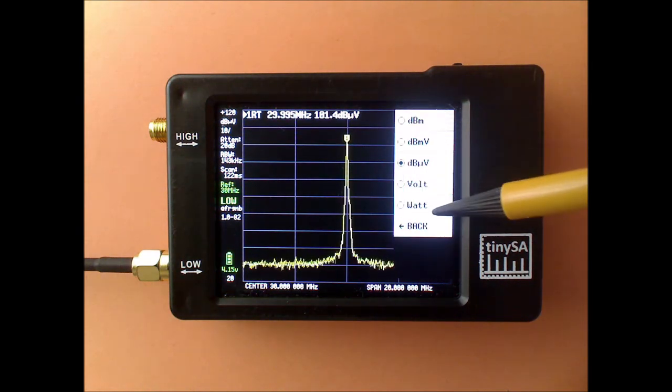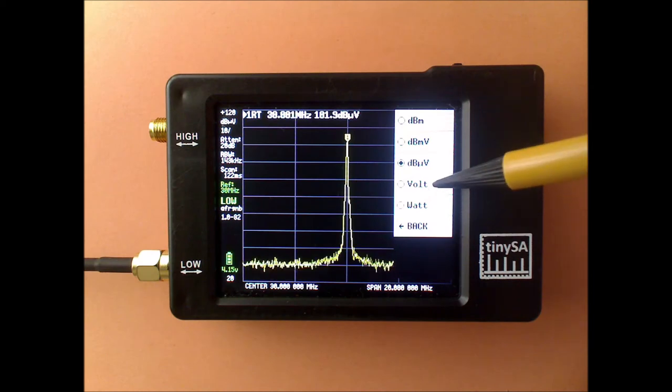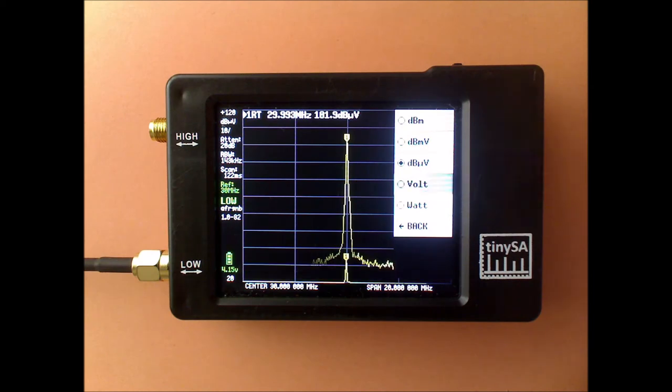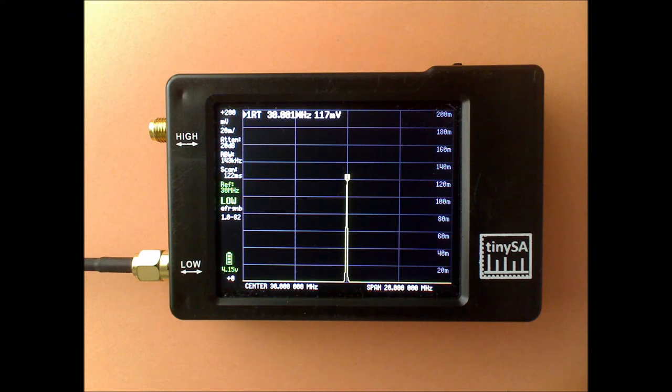But the volt and the watt are linear units, so they look very different. Because if you have the volt unit displayed, then you will see that all the noise seems to be gone. The bottom of the screen is now set to zero. But because there is such a huge dynamic range in linear scale, you are unable to see the noise.